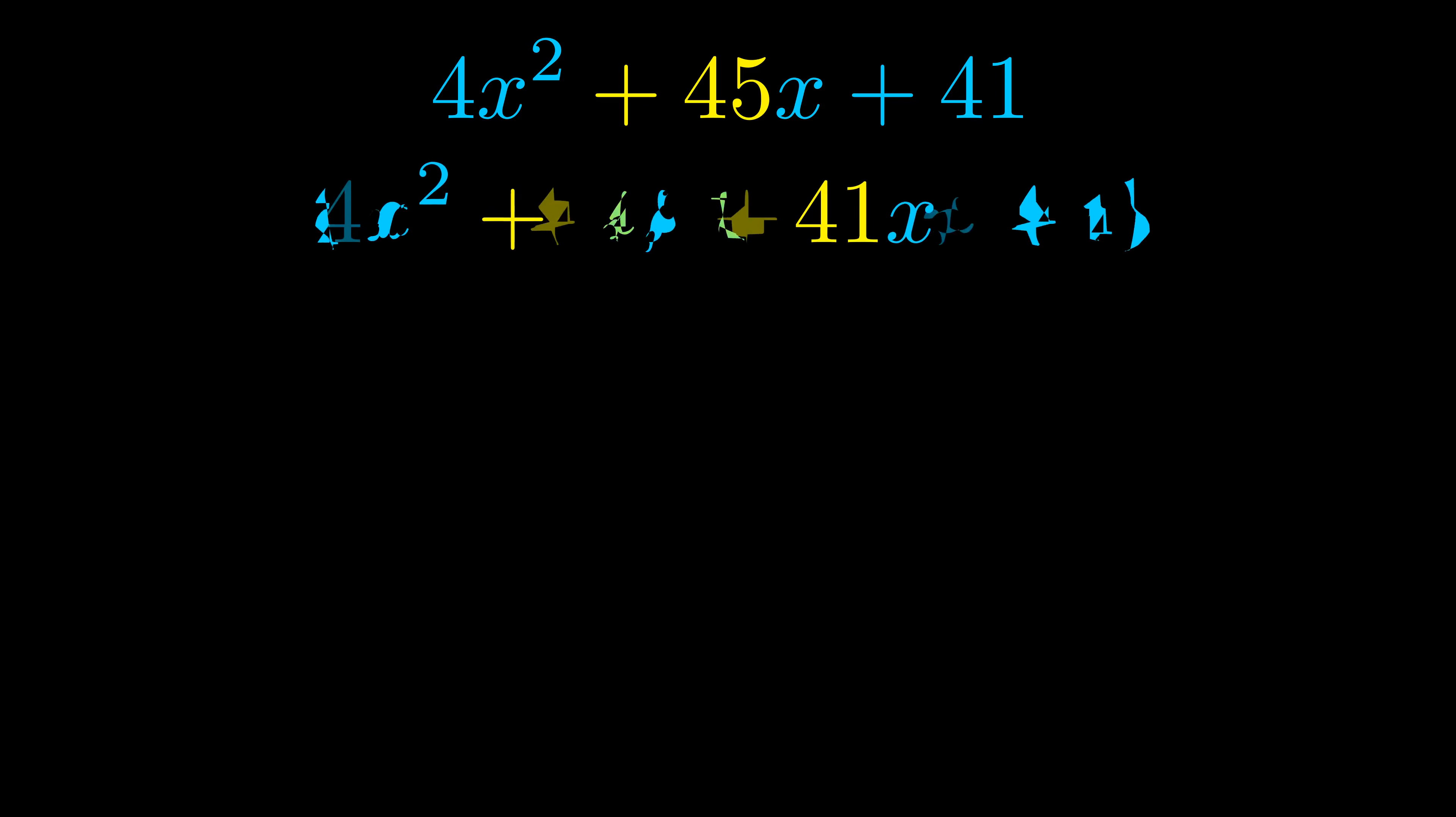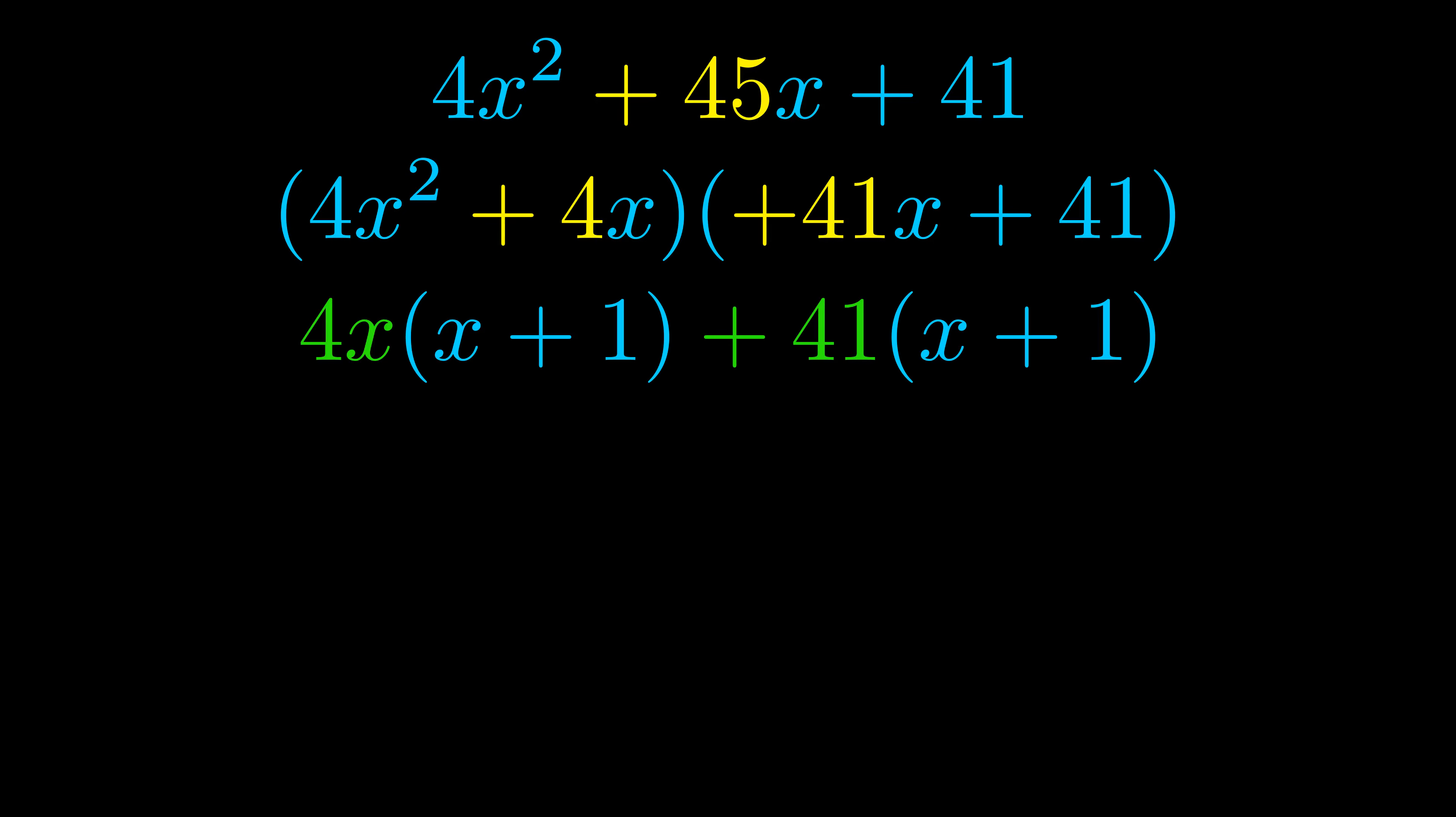Once we've done this we go ahead and we put parentheses around the first term and the last term. And we do that so that we can take the greatest common factor out of both terms. We can see the greatest common factor is now outside in green.